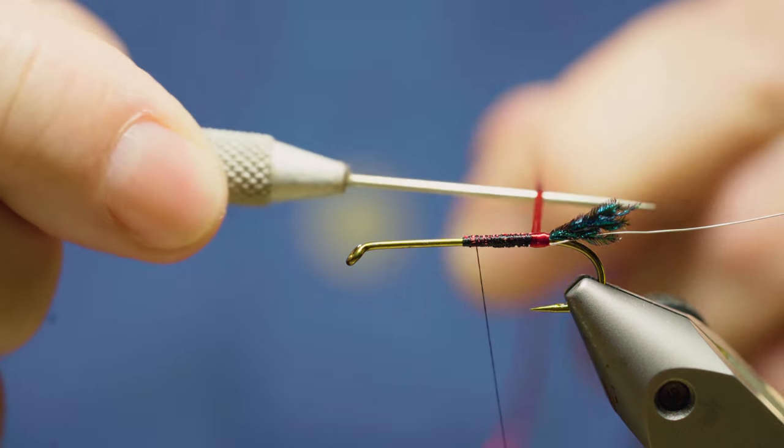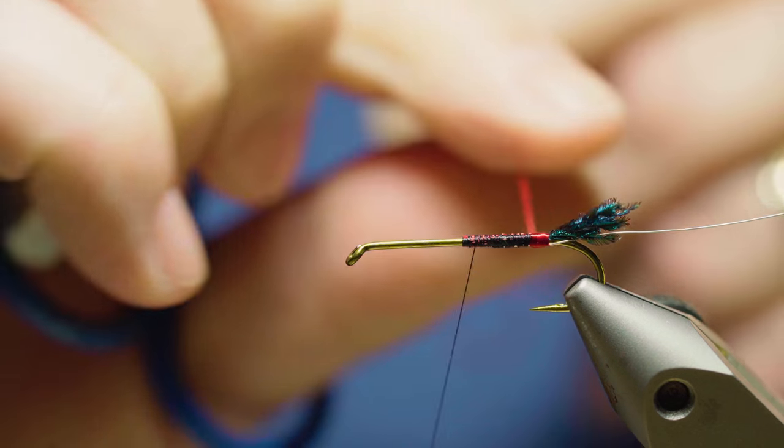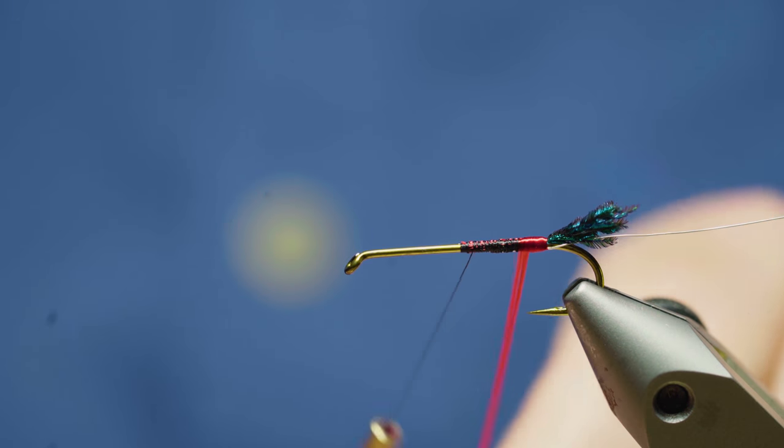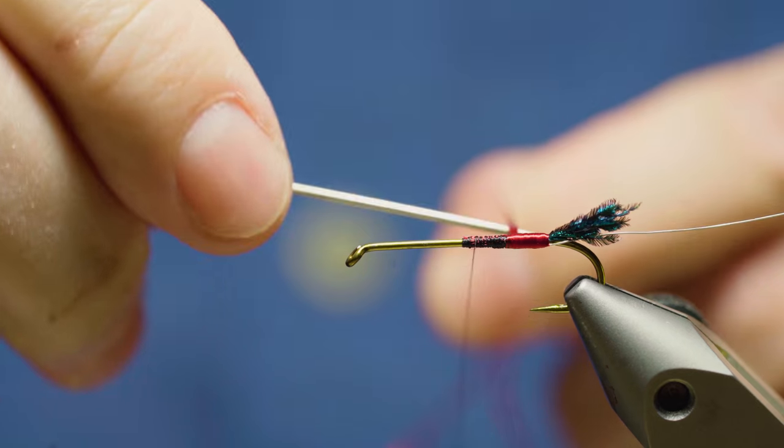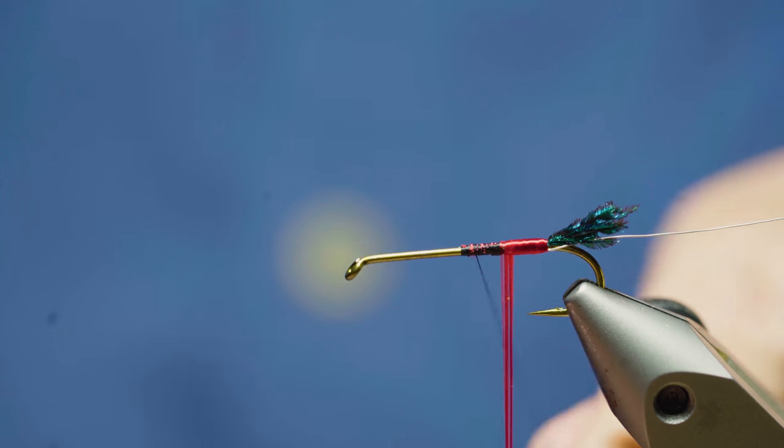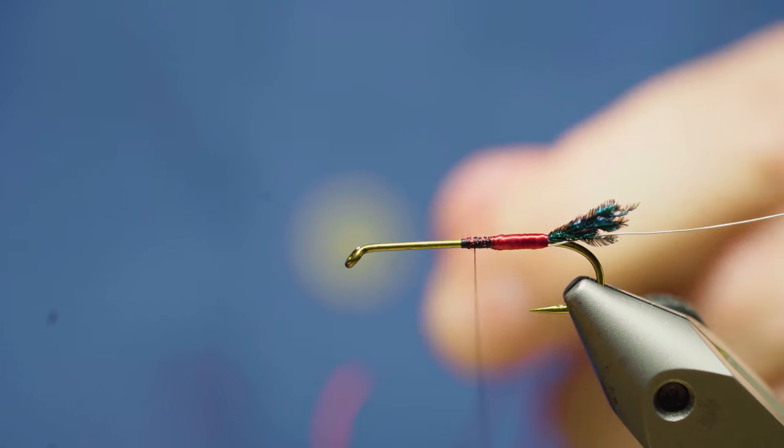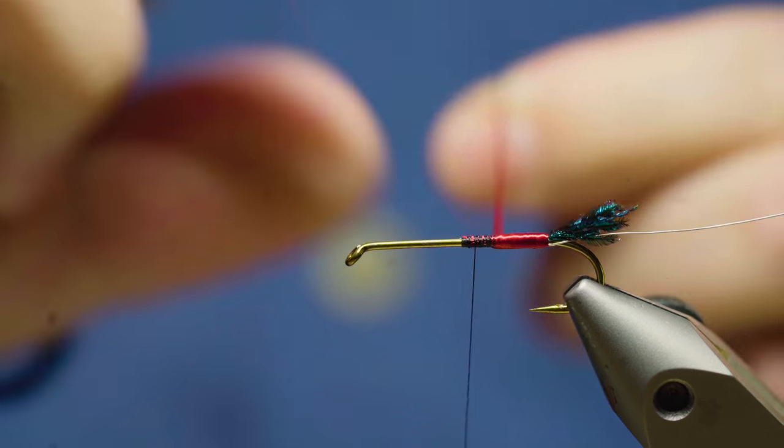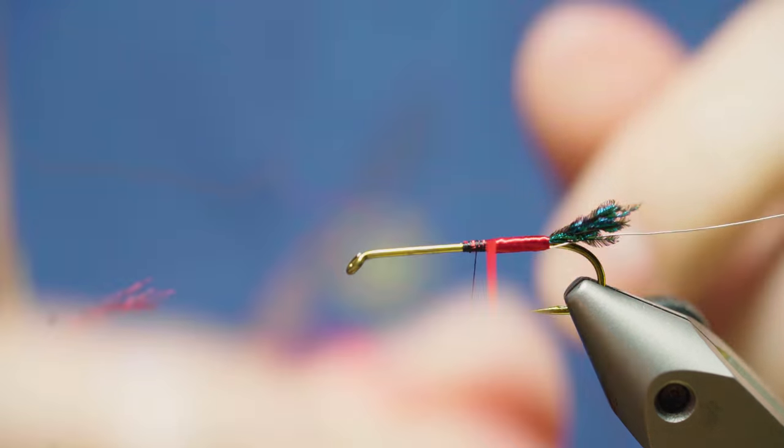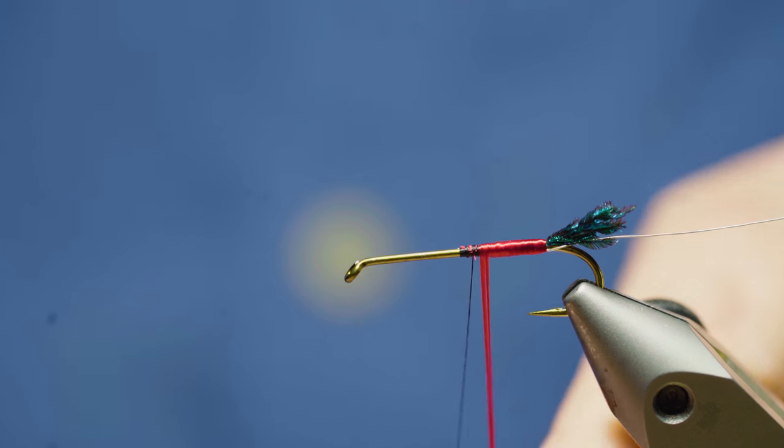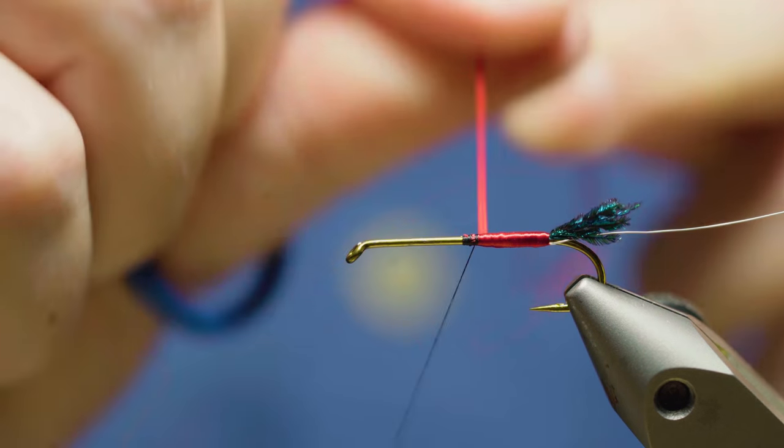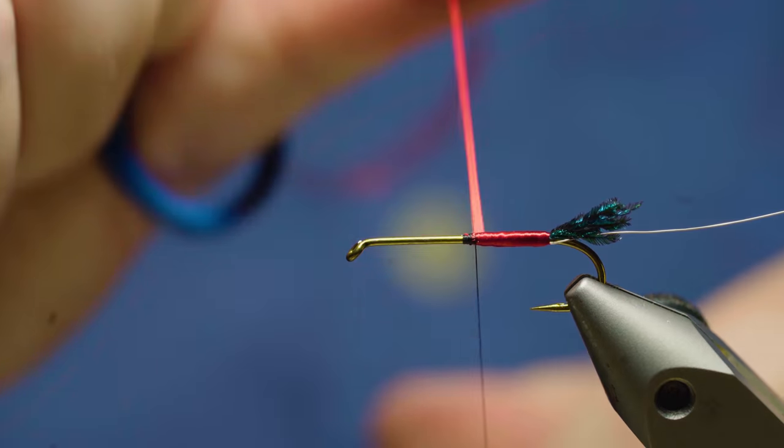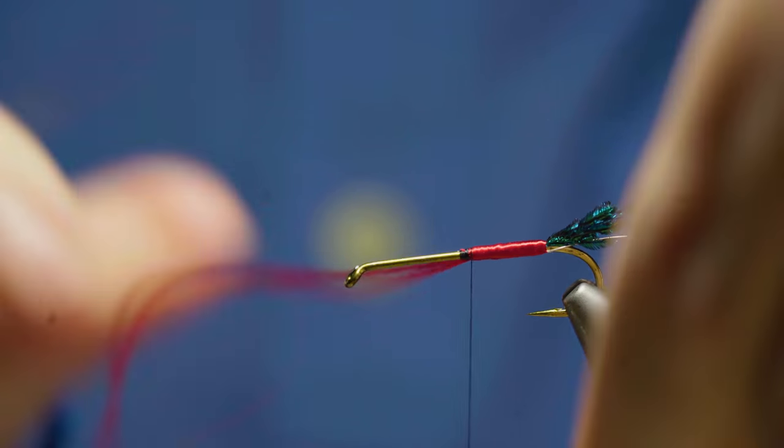Also you can use your bodkin to kind of get these to lay flat as you're coming around. People that tie steelhead flies and Atlantic salmon flies get really finicky about their body sometimes and want to keep them nice and smooth. But the key to having a smooth body is to have a smooth underbody. So you would be really careful with where you lay your wraps of thread so that you don't have any lumps or bumps. So I'm going to tie that off.